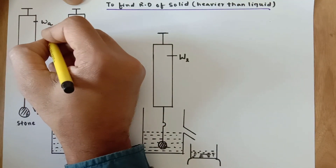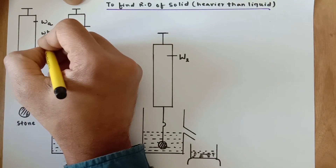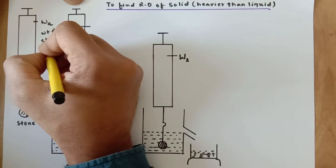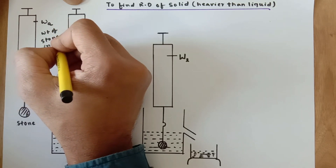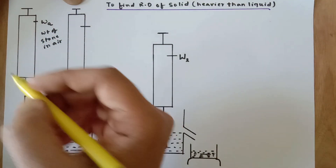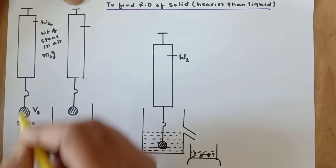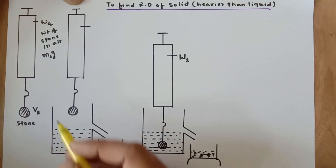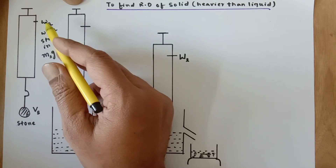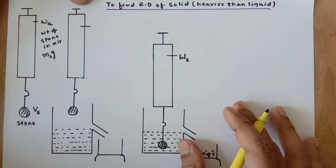This is the weight of the stone in air, which can also be written as mass of the stone times g. When you multiply mass and g you will eventually get the weight of the stone in the air.